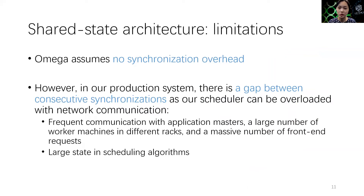Omega assumes that there is no synchronization overhead, and thus each scheduler synchronizes the entire local state with the master whenever it commits a task to the master. However, in our production system, we need to maintain a gap between consecutive synchronizations as our scheduler can be overloaded with network communication. One reason is that it has to maintain frequent communication with application masters, many worker machines in different racks, and a massive number of front-end requests. Another reason is that the size of the state that our scheduling algorithms rely on is large. Therefore, we cannot synchronize the state every time we assign a task to a slot, implying that the local state on each scheduler can be stale and conflicts happen more often, which impacts the benefit of using multiple schedulers.